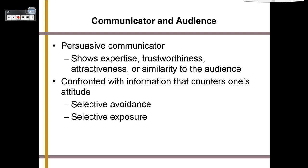In order to persuade someone, you must be a persuasive communicator. That means you show expertise in what you're talking about, you appear trustworthy, in some cases you're attractive, or you have a similarity to the audience. For example, the next time there's a national election, candidates in Texas will be on stage in a cowboy hat and boots — because they want to appear similar to the audience, making people think, 'They're just like me.'